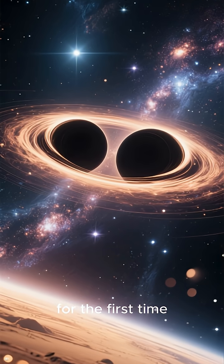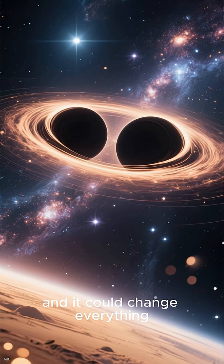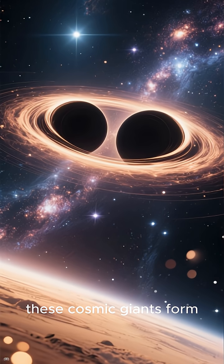Astronomers have, for the first time, detected a flattened orbit in a pair of black holes. And it could change everything we know about how these cosmic giants form.